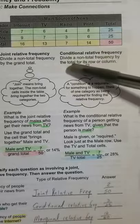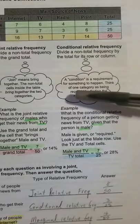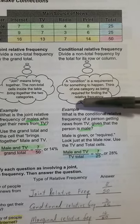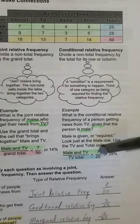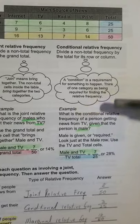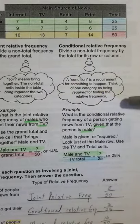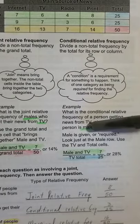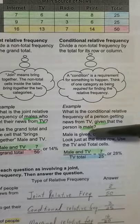The last type is called conditional relative frequency. Here you're looking at a certain condition. Let's read the question: What is the conditional relative frequency of a person getting news from TV given that the person is male? That's the condition - you have to be getting news from TV given that the person is male.